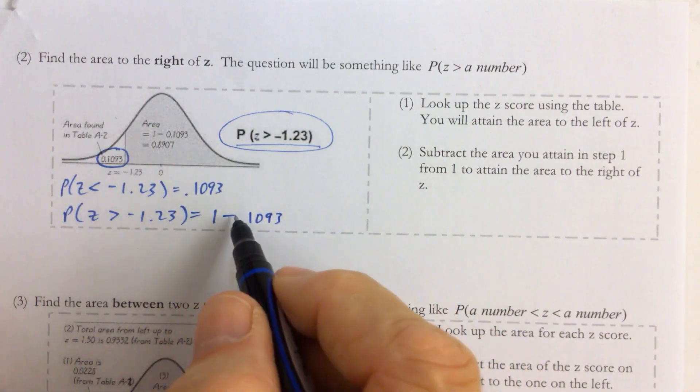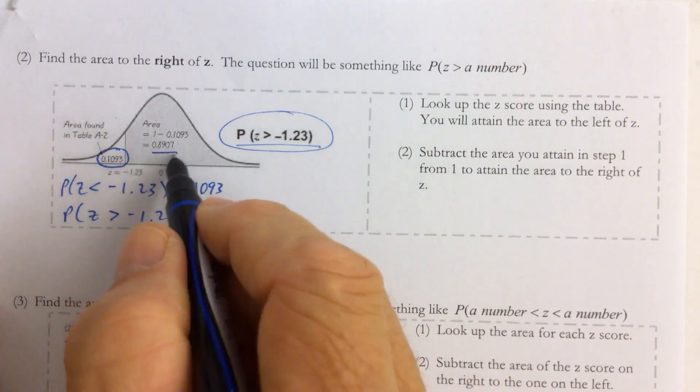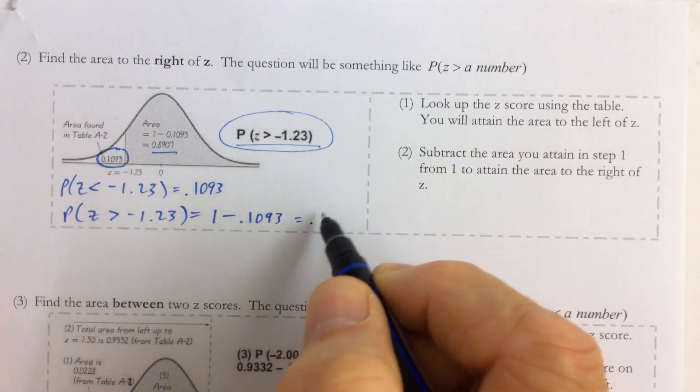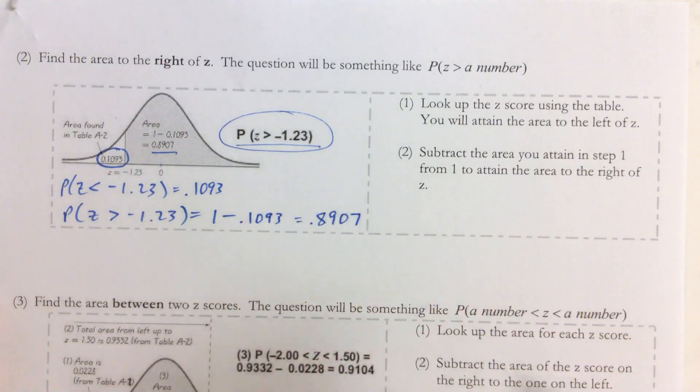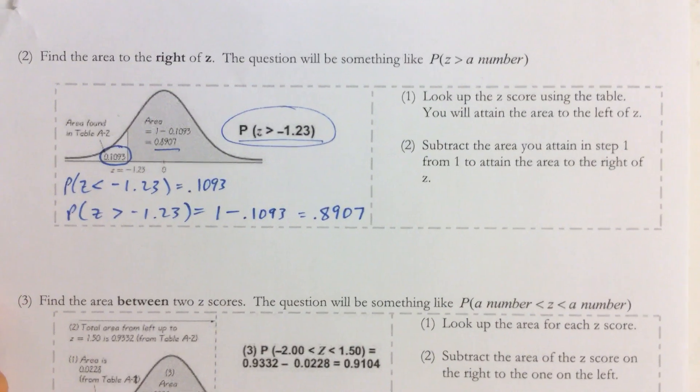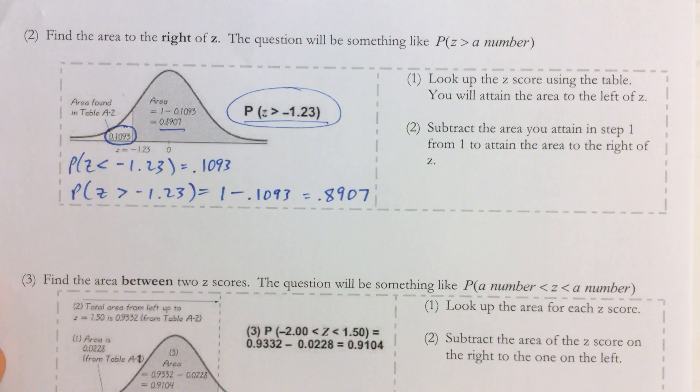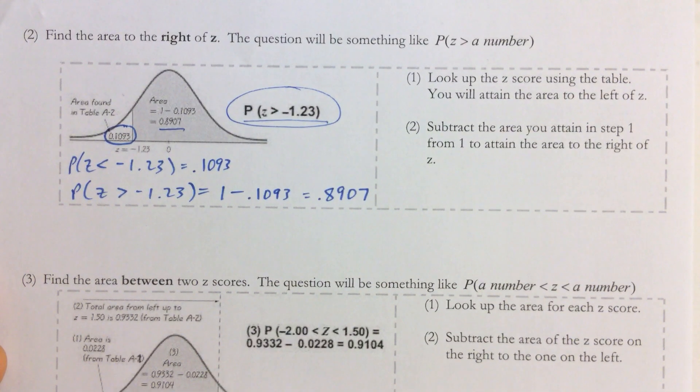And that's 1 minus 0.1093, which equals 0.8907. So that's scenario number two of the three different possibilities for finding areas or finding probabilities.